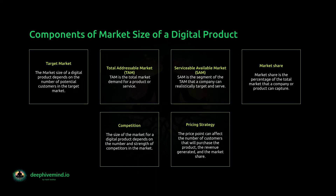Components of market size of a digital product. The market size of a digital product is determined by several components. Target market — the market size of a digital product depends on the number of potential customers in the target market. The target market can be defined by geographic region, industry, demographics, or other factors. Total addressable market (TAM) — TAM is the total market demand for a product or service. It is the entire market segment that can potentially be served by a product, and provides an estimate of the maximum revenue potential.